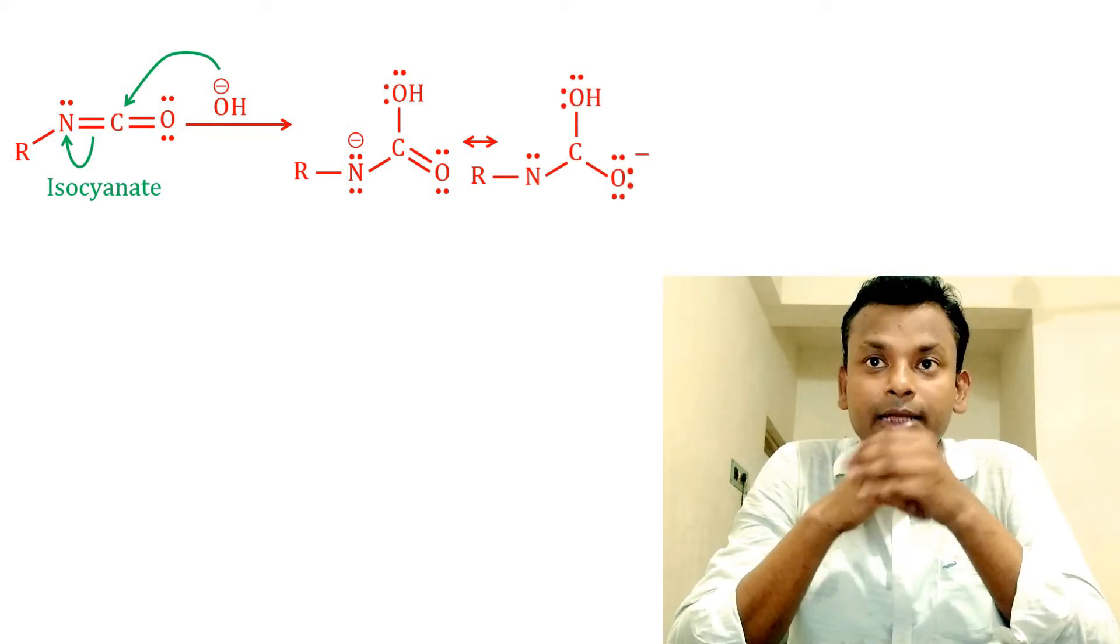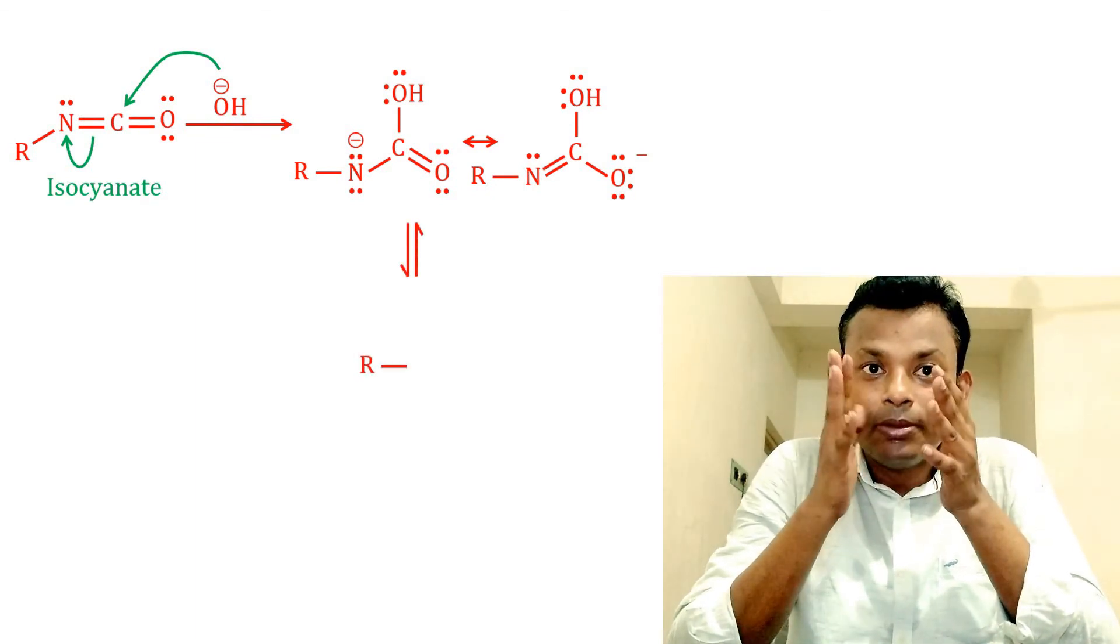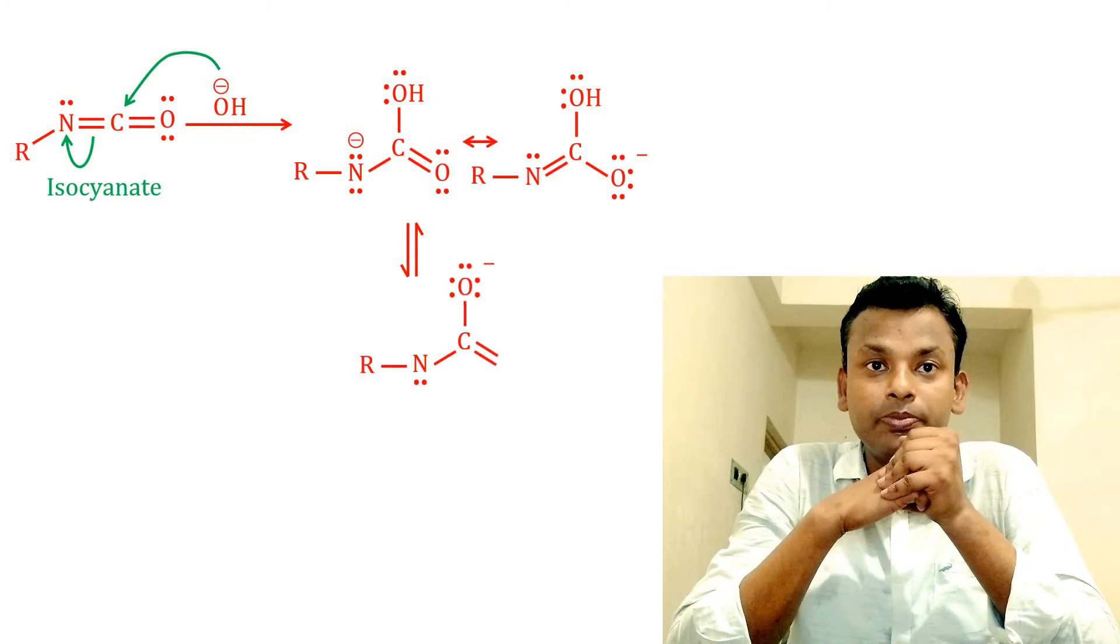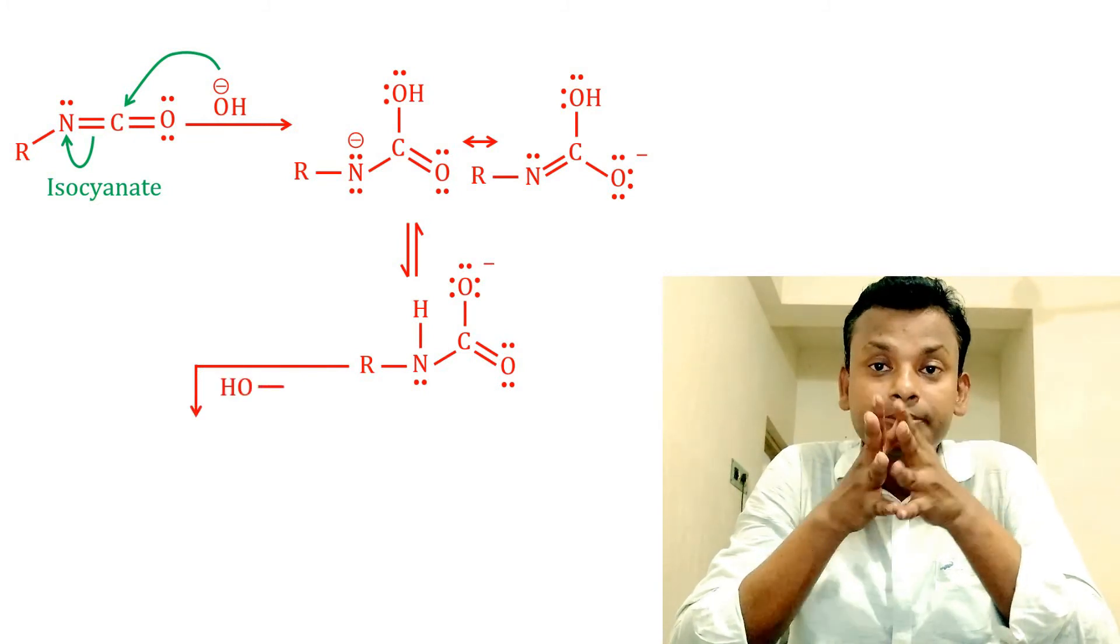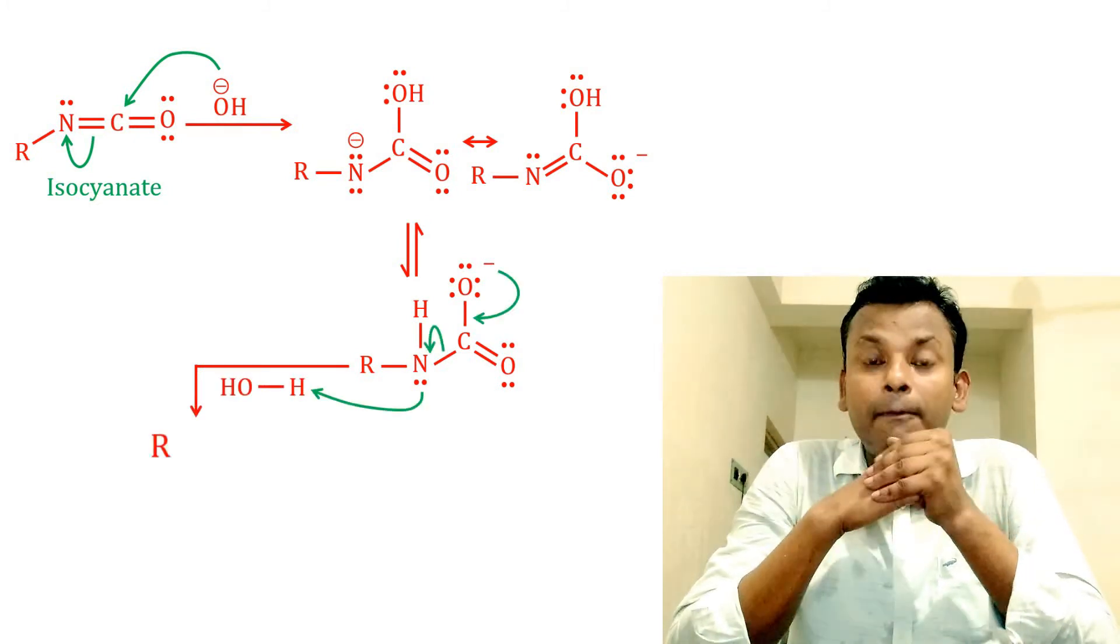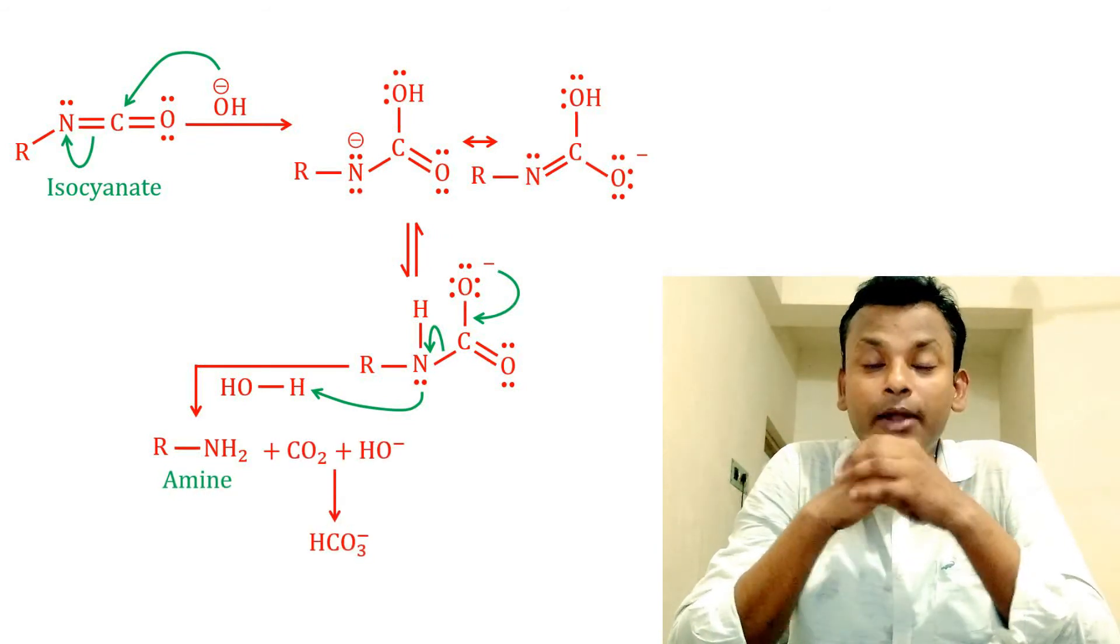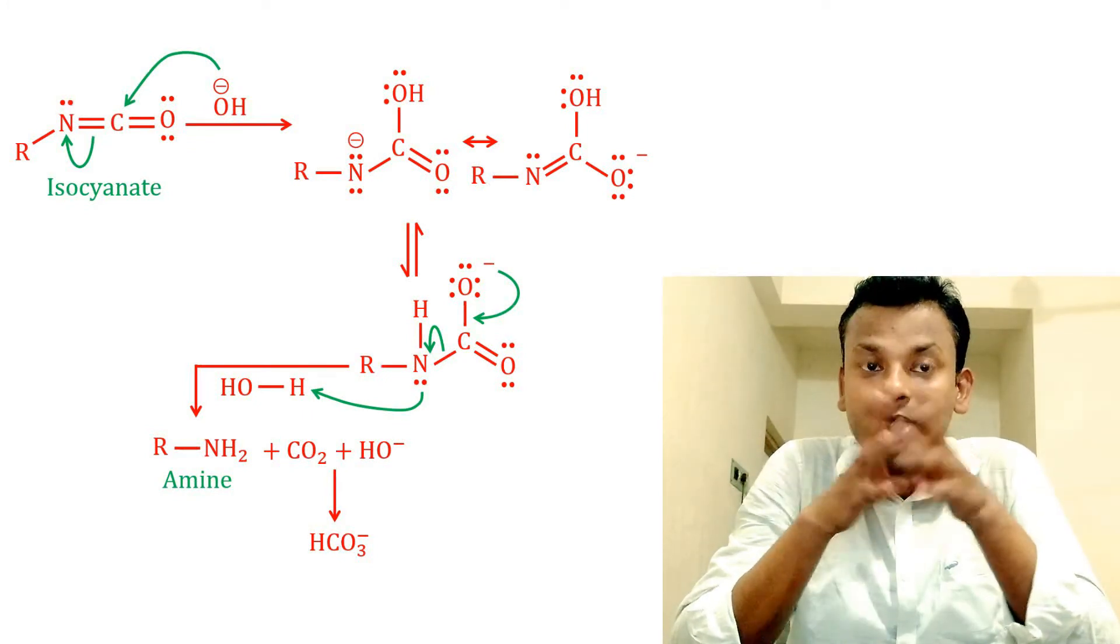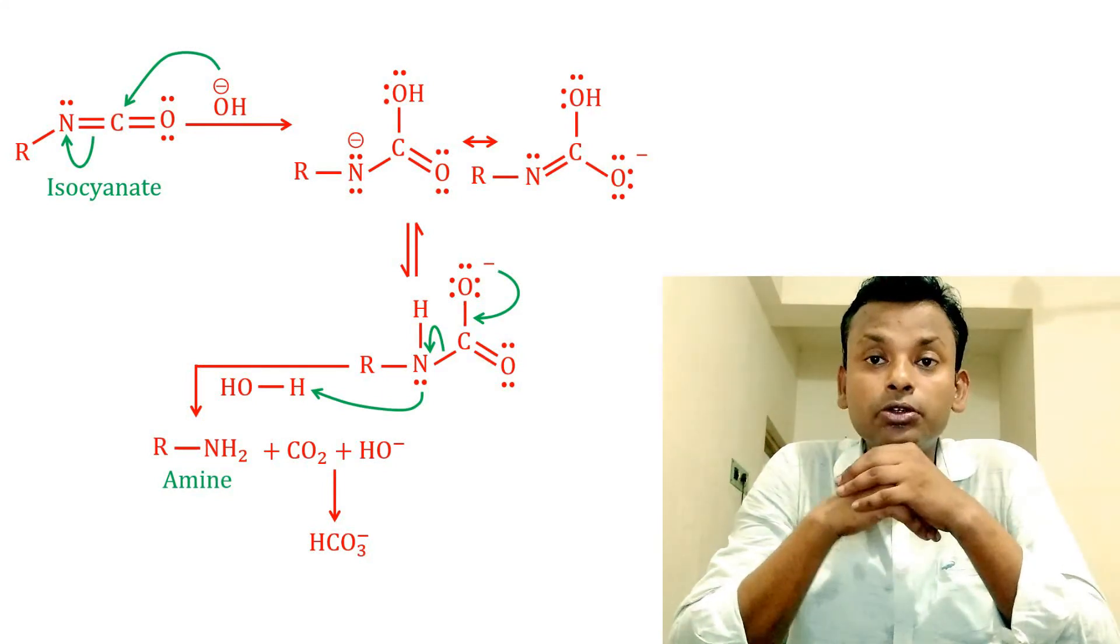Transfer of proton leads to the carbamate ion. Hydrolysis gives the primary amine, that is RNH2 and CO2, H2O, and forms HCO3- negative. Here the isocyanate undergoes hydrolysis and decarboxylation to produce primary amine.